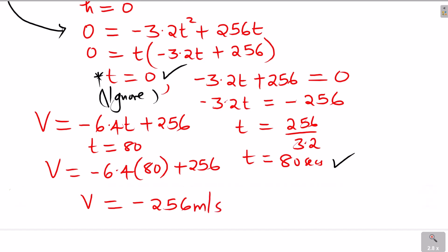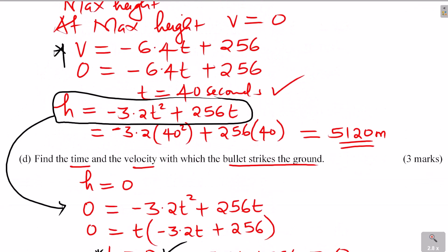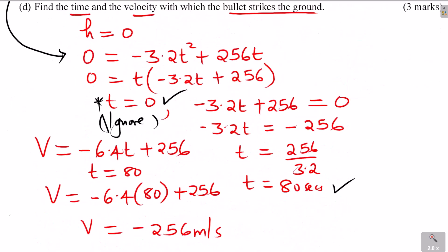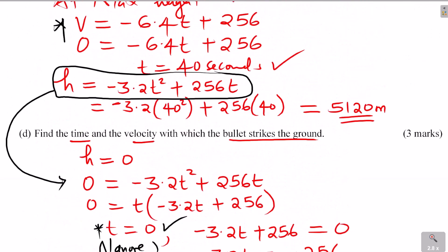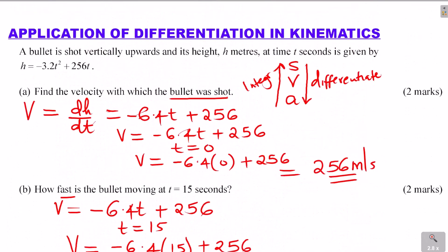That is how you work out that question. The time for the bullet to strike the ground is 80 seconds and the velocity is negative 256 meters per second. That is basically how you solve questions on application of differentiation in kinematics.